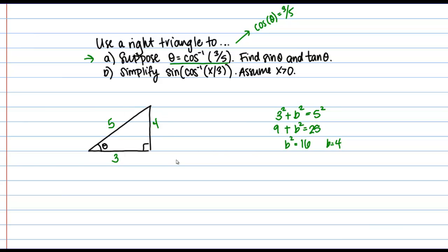Okay, so now that I have all the sides of my triangle filled in I can go ahead and answer these questions. I can just read off what sine of theta is right from my triangle. So sine of theta should be the opposite over the hypotenuse, so 4/5.